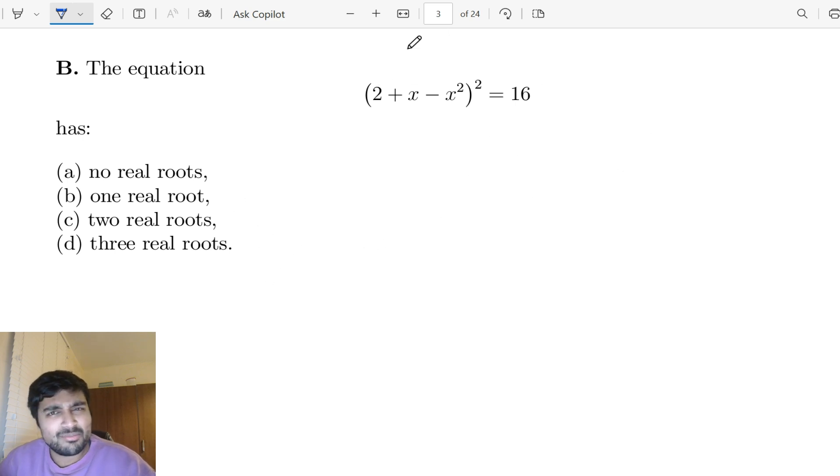And although this is easy, there's still plenty to discuss here. The first thing is you don't want to expand this, which some students might think to do. We can rewrite it as (x² - x - 2)² = 16, and that just looks a bit nicer because it's a positive x².